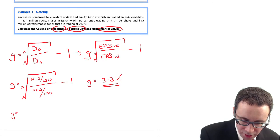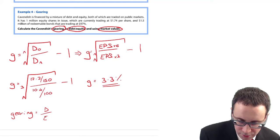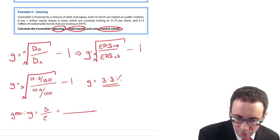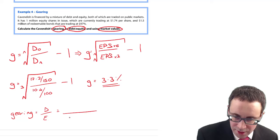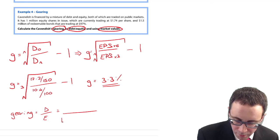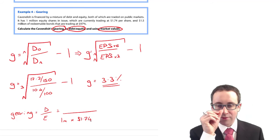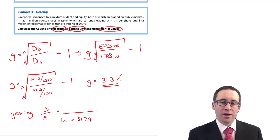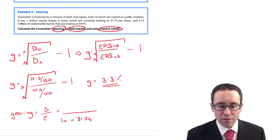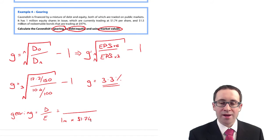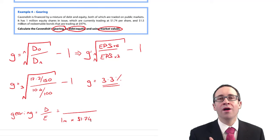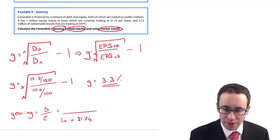Your gearing equals your debt over your equity. Your equity is that 1 million multiplied by $1.74 per share.